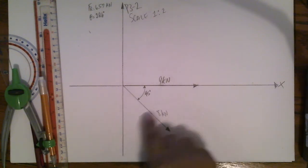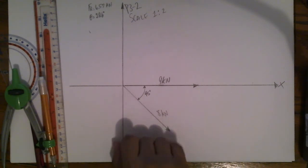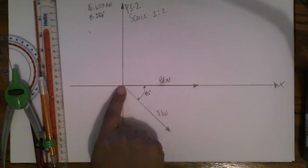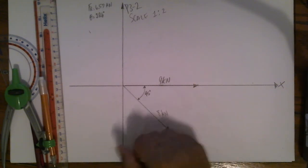We're given the 8 kilonewtons at 45 degrees. This is drawn as a 4 inch vector at 45 degrees from the axis. Also given is a resulting force of 9 kilonewtons which is directed along the x-axis, and this 9 kilonewtons is represented by a 4 and a half inch vector along the x-axis.